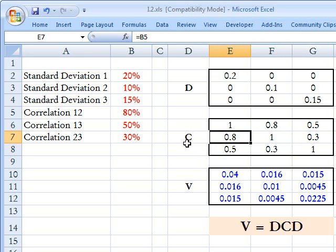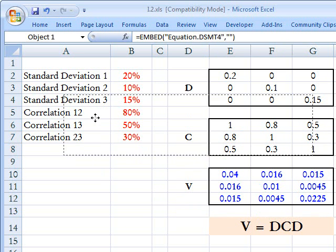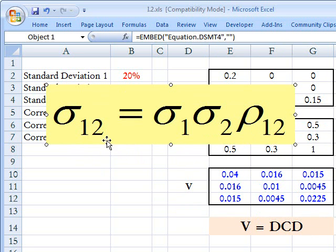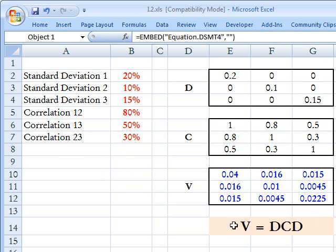So just as in our algebraic formula, where we saw that the covariance contains within it the embedded correlation, so it is also true of the covariance matrix, which contains within it the embedded correlation.